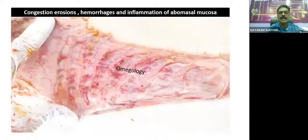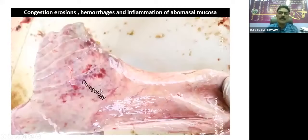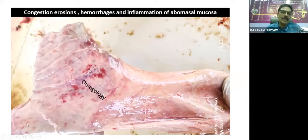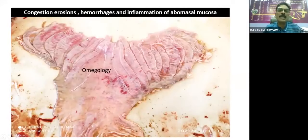The abomasum will show a variety of changes. Sometimes we are getting hemorrhages on the margin of the papillae or on the margin of the folds of the abomasum. At the margins, we are getting small pinpoint hemorrhages, and sometimes there is a diffuse hemorrhage across the body of the fold. We are getting congestion, erosion, hemorrhages, and inflammation of the abomasum mucosa. The eroded portion is present in the mucosa, and there is severe inflammation and sloughing of the mucosa. Pinpoint hemorrhages can be seen on the tips of the margins of the abomasum folds.